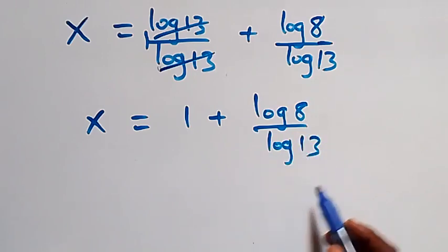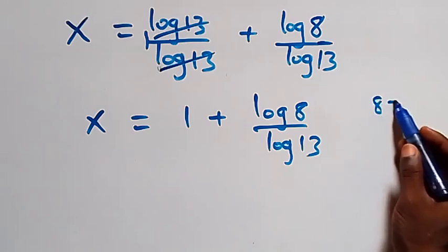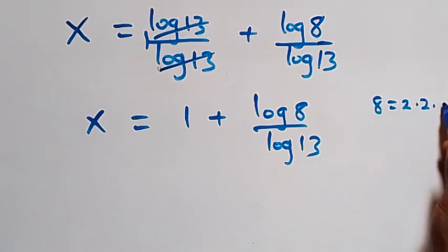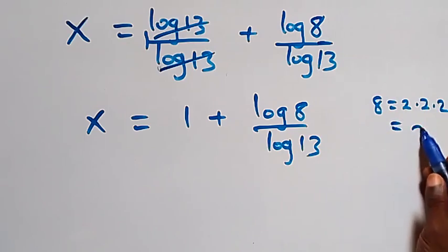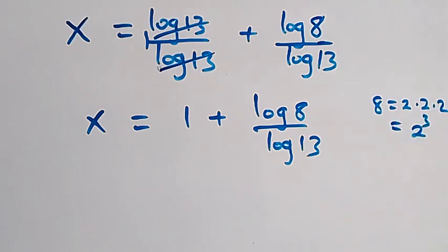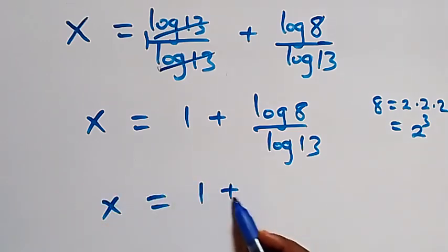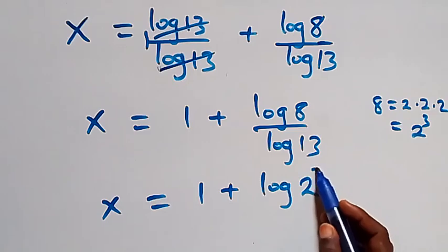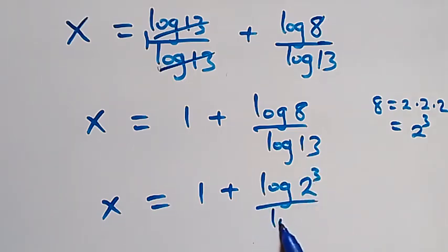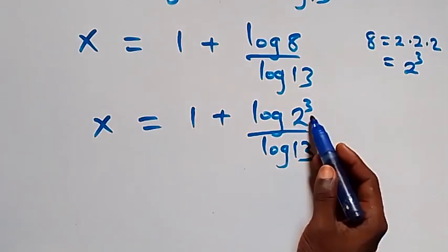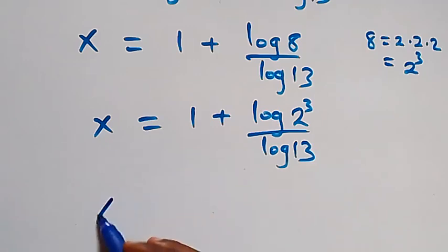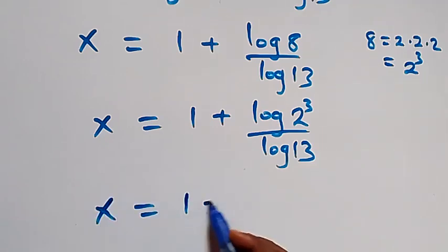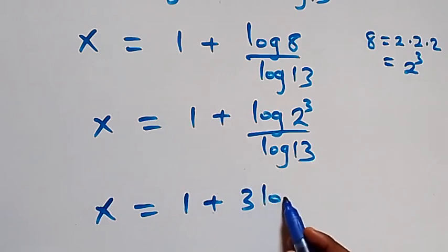Then when we simplify further, we can write 8 as 2 times 2 times 2, which is the same as 2 raised to power 3. So x equals to 1 plus log(2 raised to power 3) over log 13. Applying the power law of logarithm, the 3 comes to the front: x equals to 1 plus 3 log 2 over log 13.